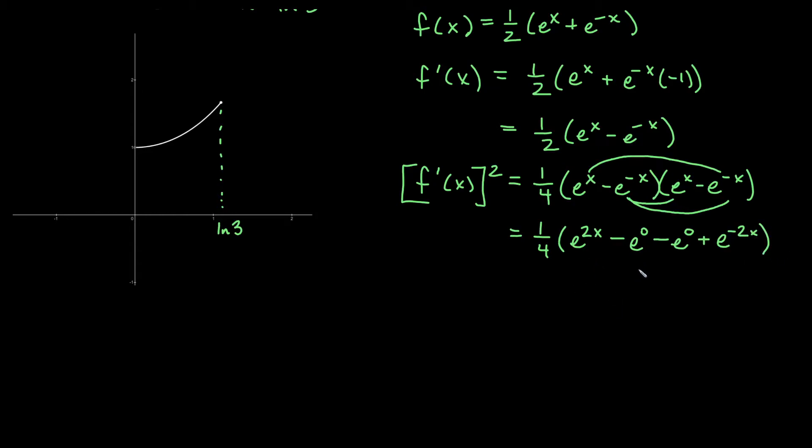Now something to notice here is that e to the 0 is going to be 1. So both of these terms here are minus 1. So when we get our f prime squared, we actually get one-fourth e to the 2x minus 2 plus e to the negative 2x.